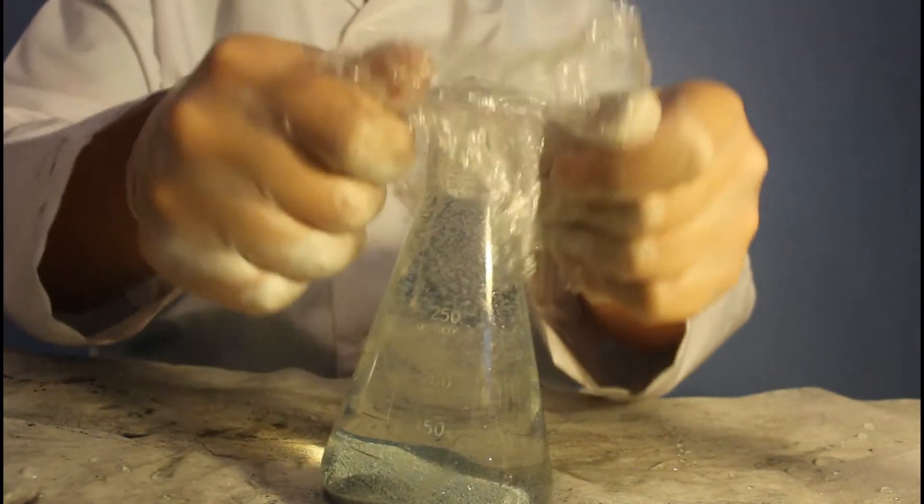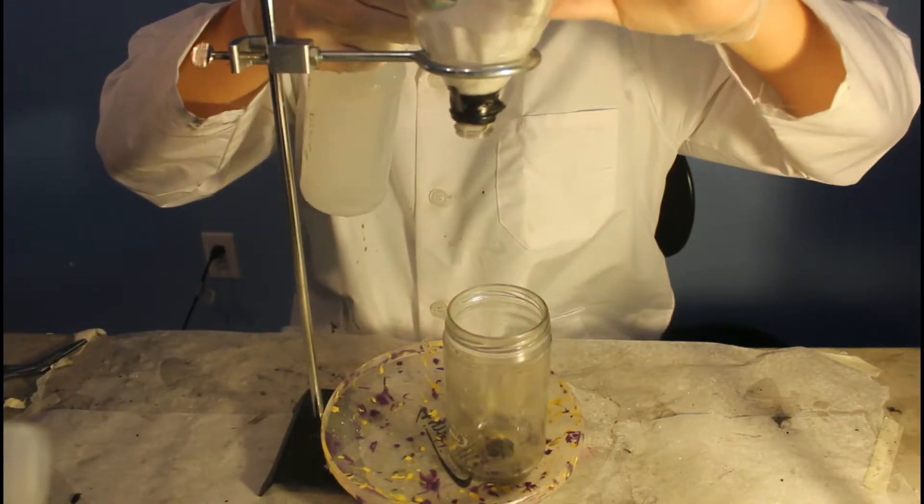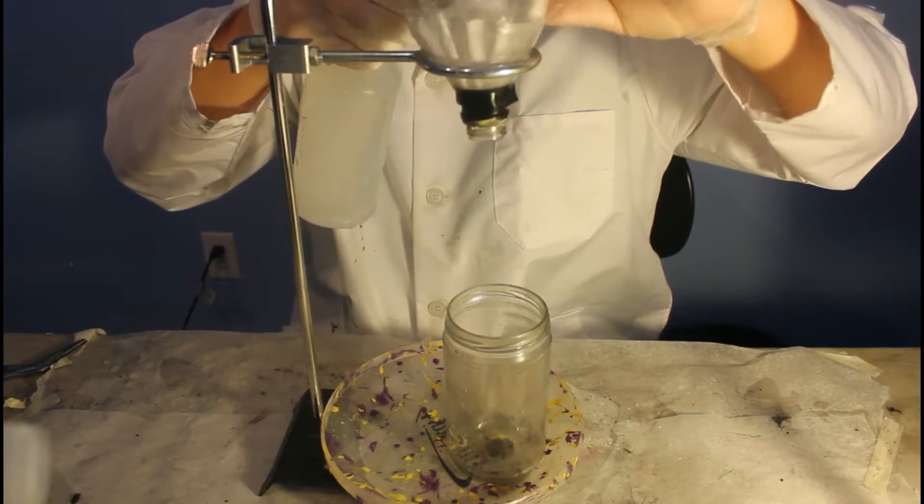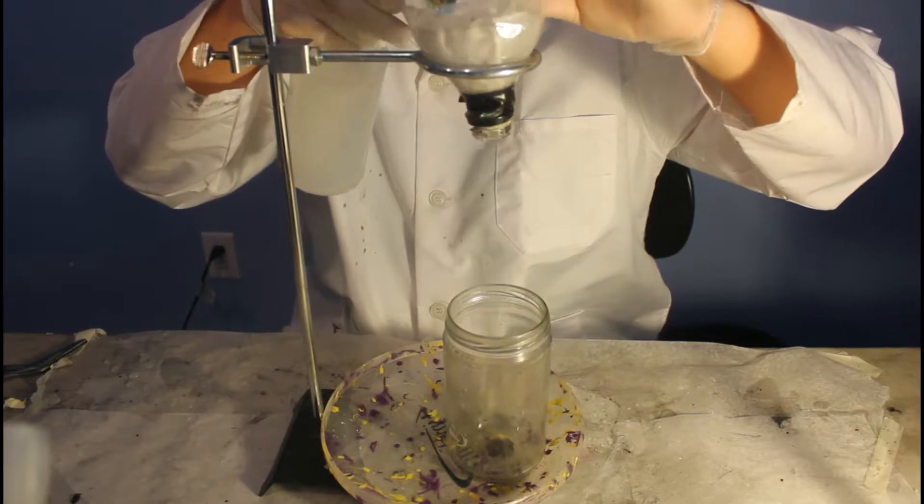The flask is then topped off with water, capped, and set aside for the filtration. The filtration is set up by suspending a funnel on a ringstand over a receiving beaker. A filter paper is added to the funnel and wet with a wash bottle so it sticks to the side of the funnel.